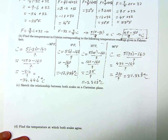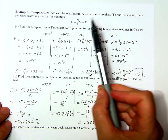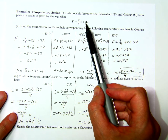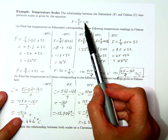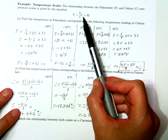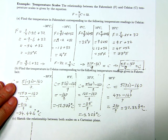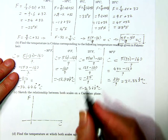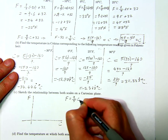Suppose I want to sketch the relationship between both scales on a Cartesian plane. This line is going to cross the y-axis at 32. I'll draw the F-axis in steps of 10, and do the same for Celsius. The relationship is between variable C for Celsius and F for Fahrenheit, graphing the equation F equals 9 over 5 times C plus 32.